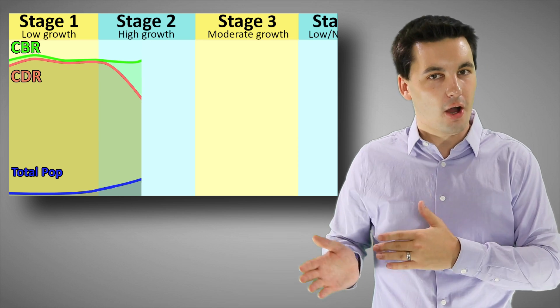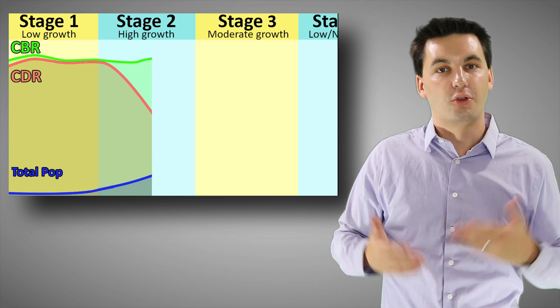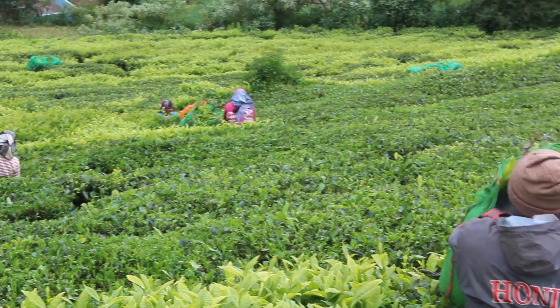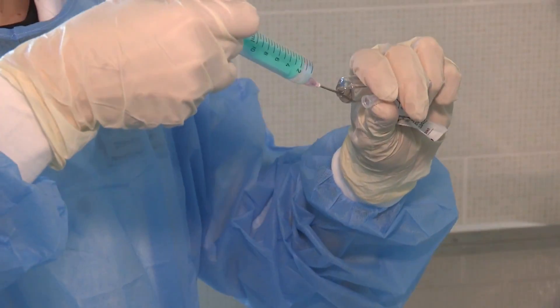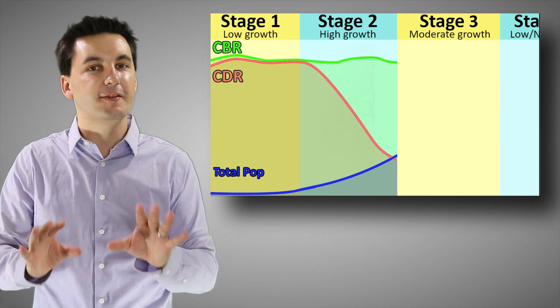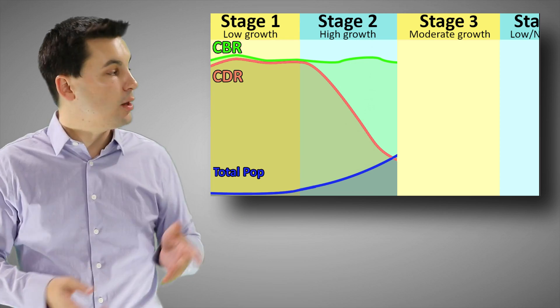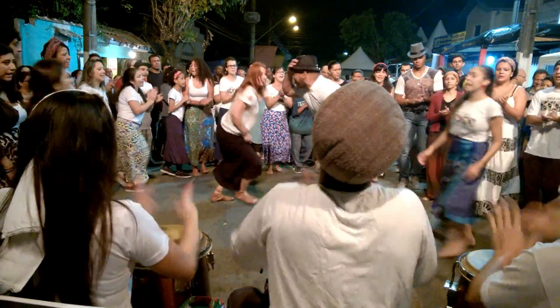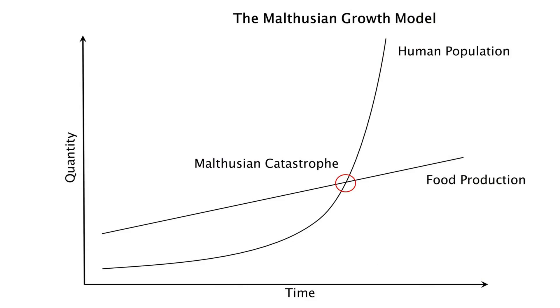Their CDR — crude death rate — is going down now, because of advancements in the industrial revolution with food surplus and more efficient production, and also the medical revolution where people are living longer and infant mortality rate is decreasing. Births are high and deaths are decreasing, leading to a population boom. This is when Thomas Malthus looked at what was happening and said we're going to have a big issue — but the demographic transition model shows us he was wrong. He was in stage two and didn't see what was going to happen next.